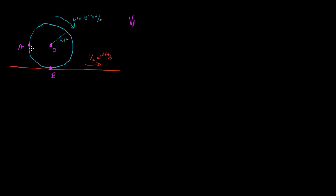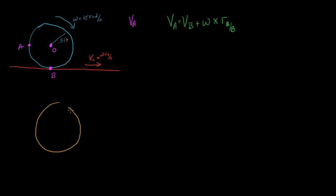Because we're looking for the velocity of A, we can figure out the velocity of A by the following equation: the velocity of A is equal to the velocity of B plus the angular velocity crossed with the position vector from A with respect to B. We're going to draw a kinematic diagram as our first step, and put in all the vectors we're interested in.